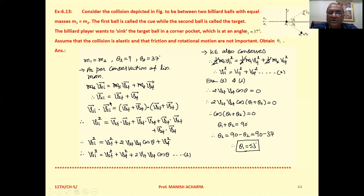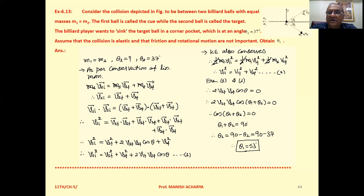Now take the dot product of this equation with itself. On the left-hand side we get vector V1i dot vector V1i, which equals V1i squared. On the right-hand side we expand vector V1f plus vector V2f dotted with itself, giving: V1f dot V1f, plus V1f dot V2f, plus V2f dot V1f, plus V2f dot V2f.